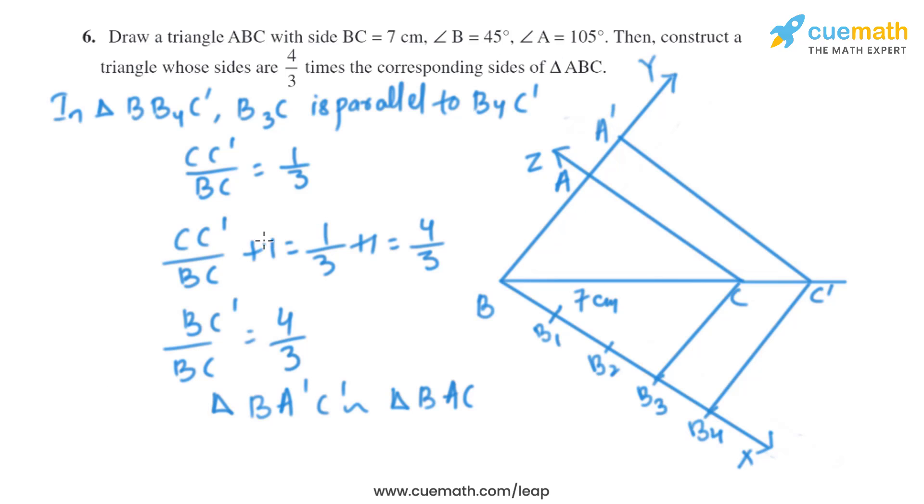Now let's do the justification of this construction. In triangle BB4C', B3C' is parallel to B4C', and we will get CC' by BC equals 1 by 3 using basic proportionality theorem. And we'll add one to both sides, and when we add one to both sides we'll get BC' by BC equals 4 by 3.